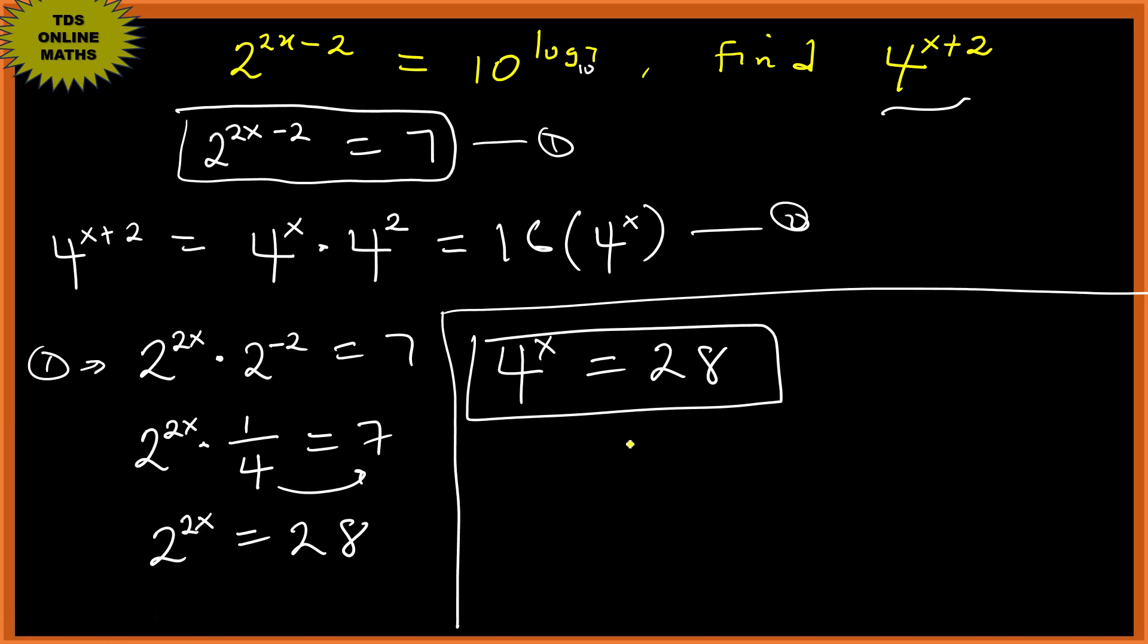So let's go ahead and do substitution here. We have 4 to the power x plus 2 equals 16 times 4 to the power x, so that's 16 times 28 as the answer. So let's multiply 28 times 16. You can put the answer in the comment section below.